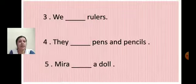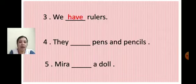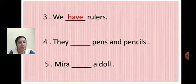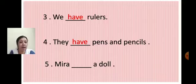Now we will move to the next slide. We dash rulers - they have. Next: They dash pens and pencils. Sentence begins with they, so we write have. They have pens and pencils.